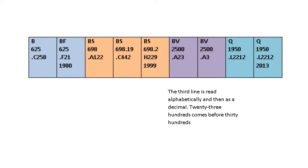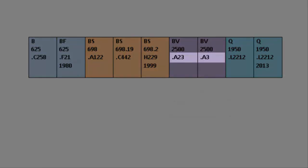The third line begins with a decimal point. Look at the letter, then the number on that line. Remember that there is a decimal point before the number, so 0.23 would come before 0.3. 23 hundredths comes before 30 hundredths.